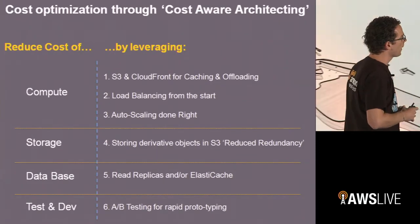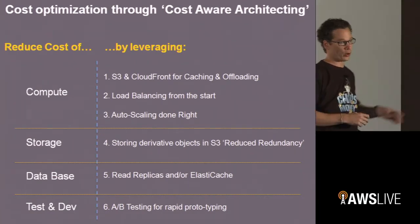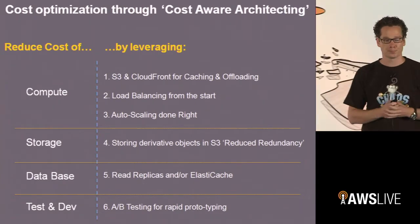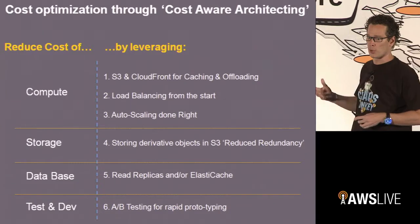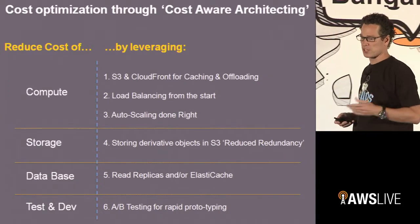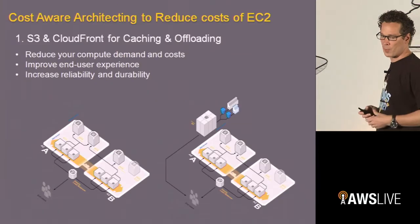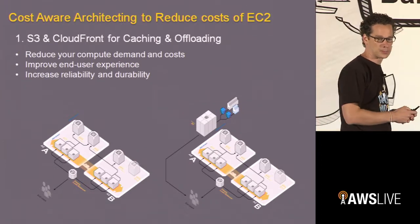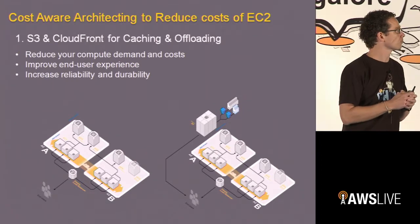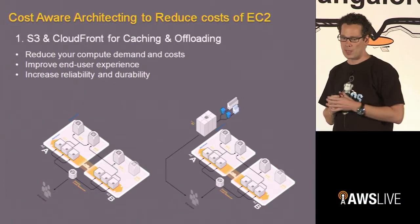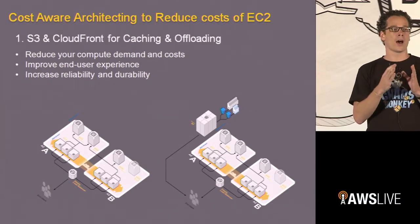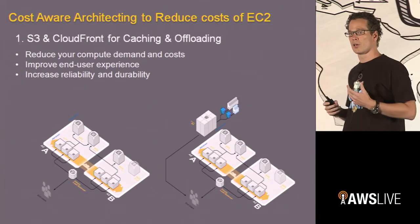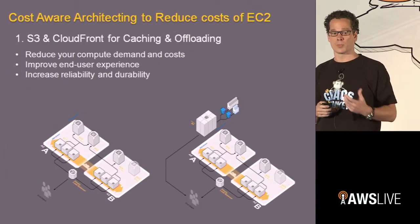There are a couple — really a lot — of things we can do, and these are basic, very simple, standard things. There are different ways to reduce the cost of your compute, your storage, your database, and your test dev. So let's zoom into some of those. We go back to some of the architectures that are familiar, because throughout this session we've been touching upon and building this architecture. The first one is caching and offloading.